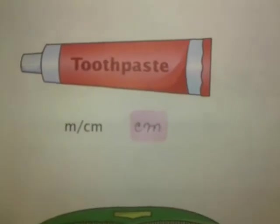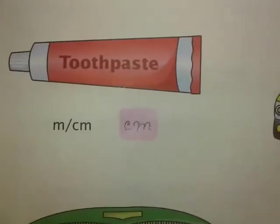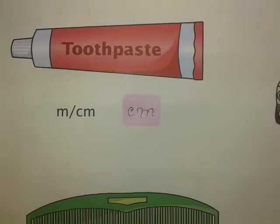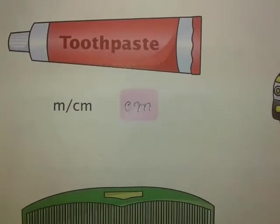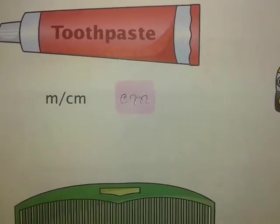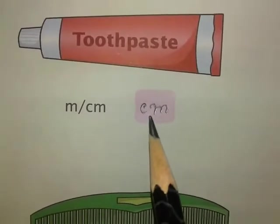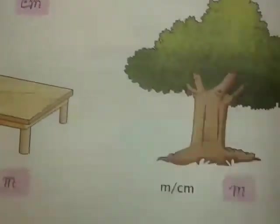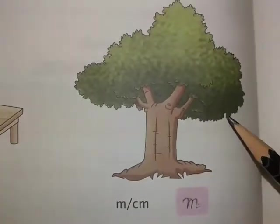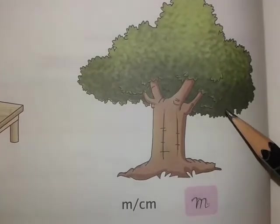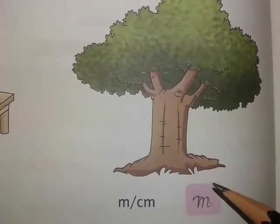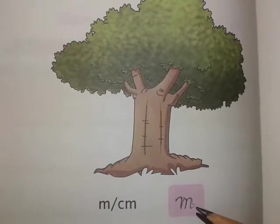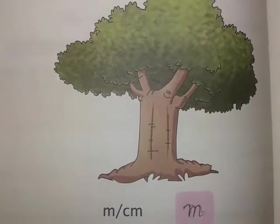This is a toothpaste tube - all of you have seen a toothpaste tube. These are not much bigger in size, so for measuring smaller units we use centimeters. Whereas this picture shows a huge tree, so for measuring this long, huge tree we have used meters as the unit of measurement.